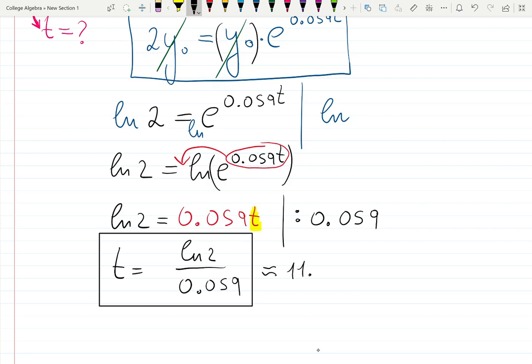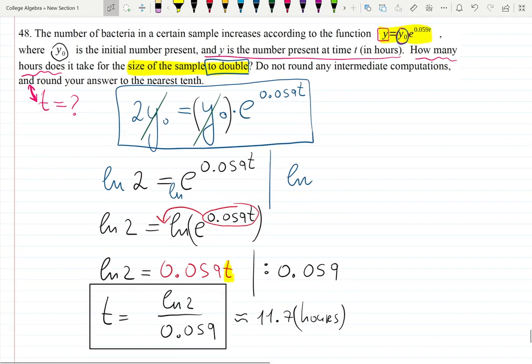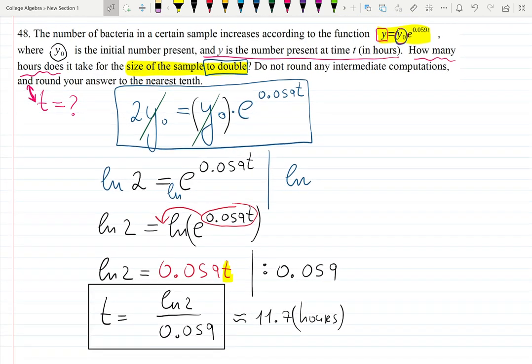That's the actual finite answer, and it's an exact answer. And then they ask us to approximate, it will be 11.7 hours. So we need to wait for 11.7 hours for the population of the bacteria we are researching to double.